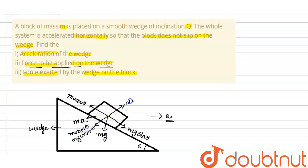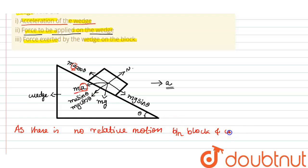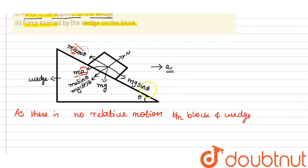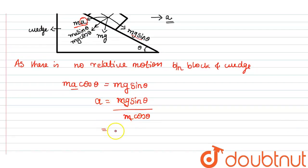Now we need to calculate the acceleration of the wedge — we need to find the value of a. Since there is no relative motion between the block and the wedge, we can write: ma cosθ = mg sinθ. Rearranging: a = mg sinθ / (m cosθ). The m cancels, and sinθ/cosθ is tan θ, so a = g tanθ.